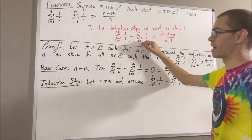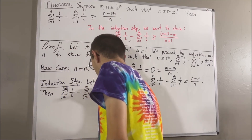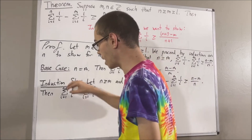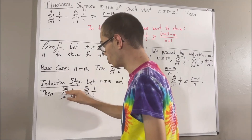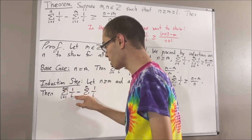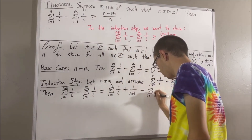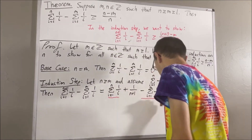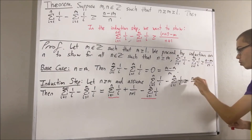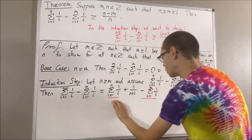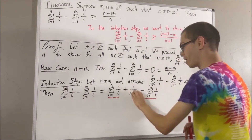Let me start out by writing the left-hand side of this inequality. Now, let's take this sum and pull away the n plus 1 term. So, we can rewrite this as the sum from i equals 1 to n of 1 over i plus 1 over n plus 1. We know that what we have underlined in red is greater than or equal to n minus m over n. Therefore, this entire thing must be greater than or equal to n minus m over n plus 1 over n plus 1.